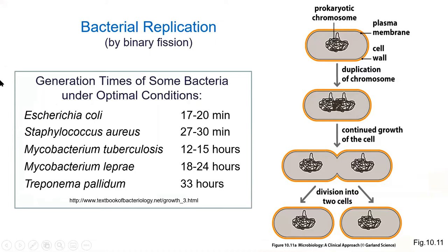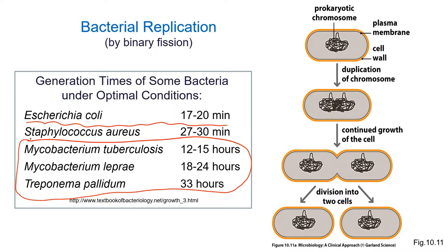E. coli gets a lot of fame with molecular biologists because it's very easy to grow in the lab and grows very quickly. There are some slow growers: Mycobacterium tuberculosis causes tuberculosis, Mycobacterium leprae causes leprosy, and Treponema pallidum causes syphilis — these are really slow growers. If I wanted to culture Mycobacterium tuberculosis for diagnostic purposes, it would actually take a couple of weeks, so we have other methods for tuberculosis.